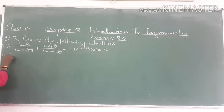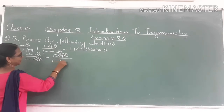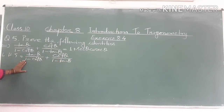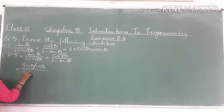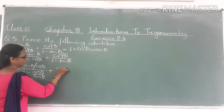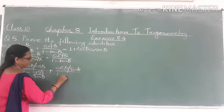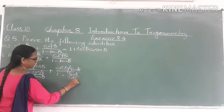Now we start. Left hand side equals tan θ upon 1 minus cot θ, plus cot θ upon 1 minus tan θ. This is our left hand side. First we convert tan θ and cot θ into sin θ and cos θ. So tan θ equals sin θ upon cos θ, and cot θ equals cos θ upon sin θ.